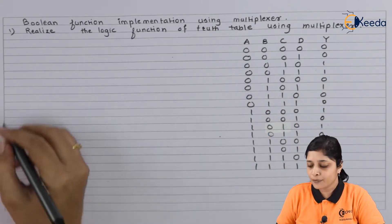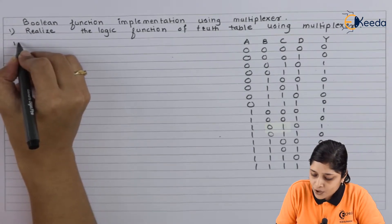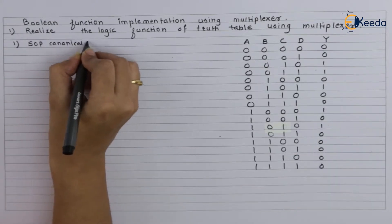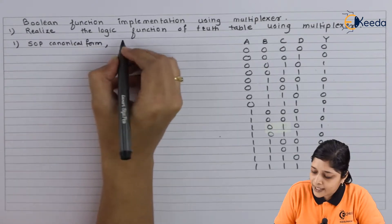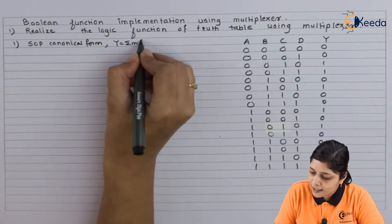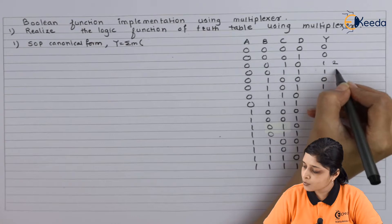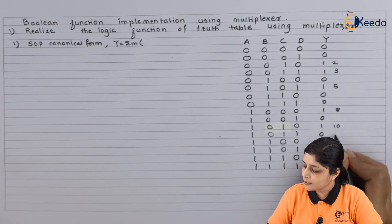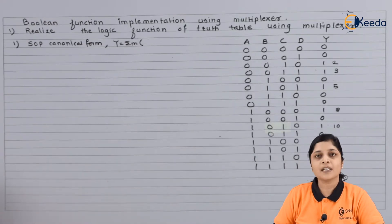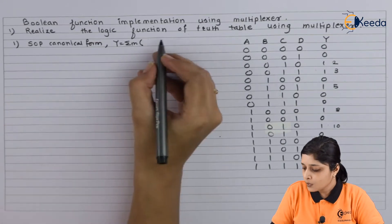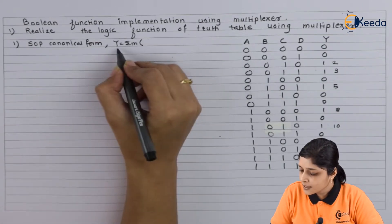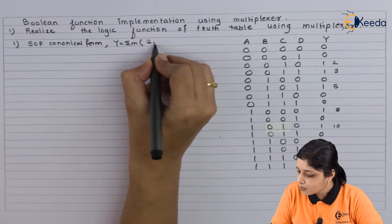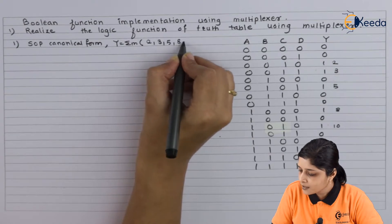Once you form the SOP expression in canonical form, we have y equals summation m. We will write here 0, 1, 2, 3, 4, 5, 6, 7, 8, 9, 10 and remaining are the logic zeros. So the SOP expression in terms of y equals sum of product terms 2, 3, 5, 8, and 10.